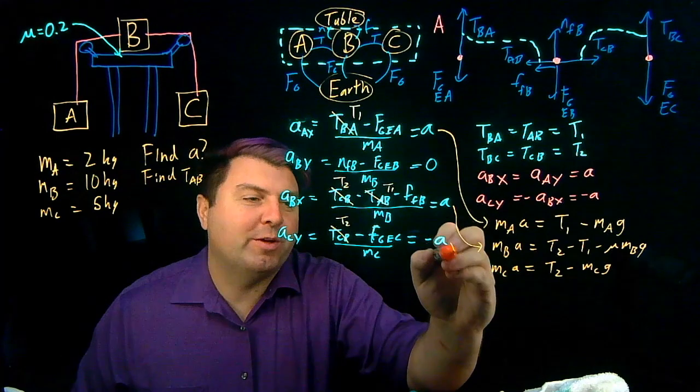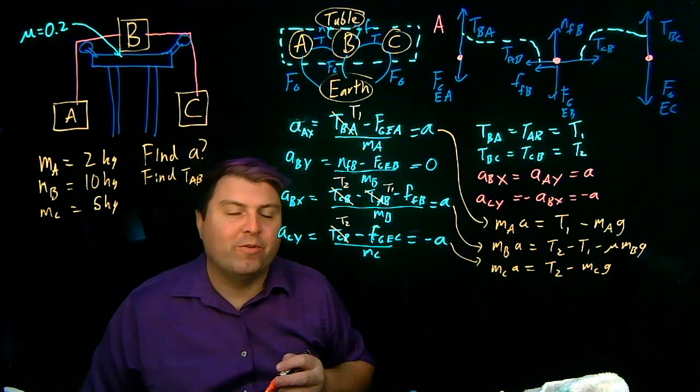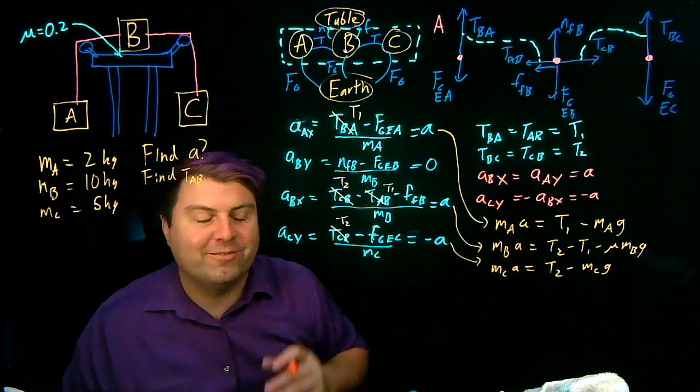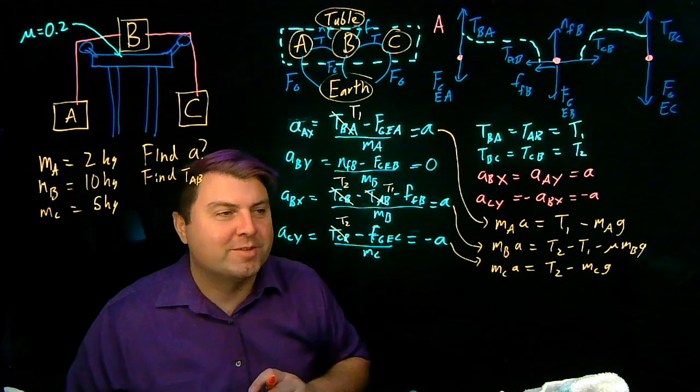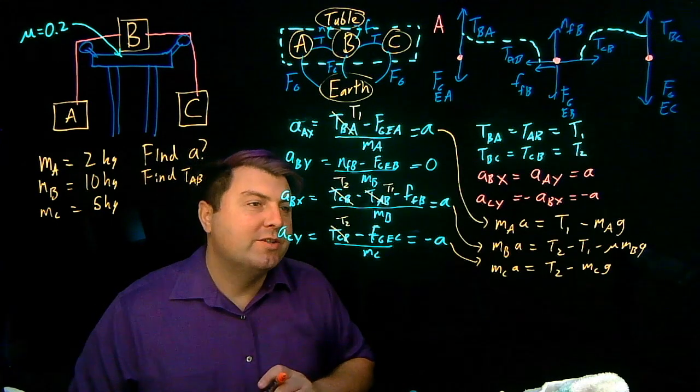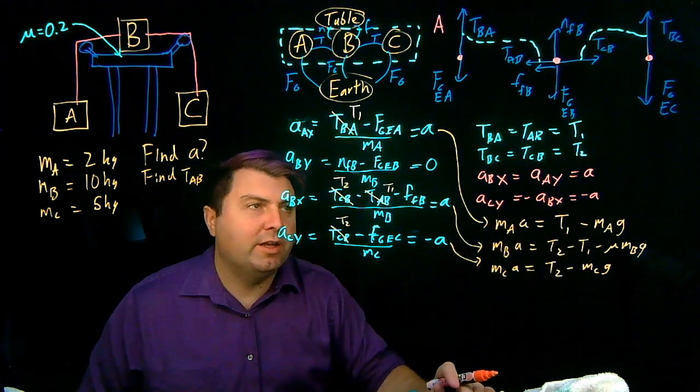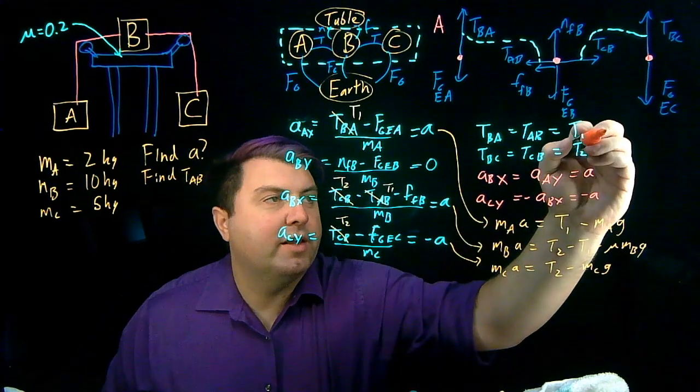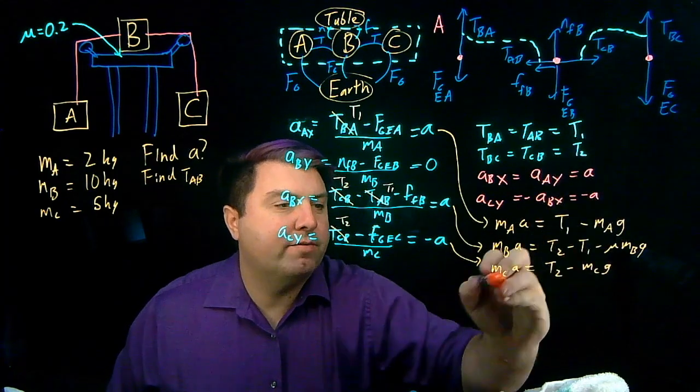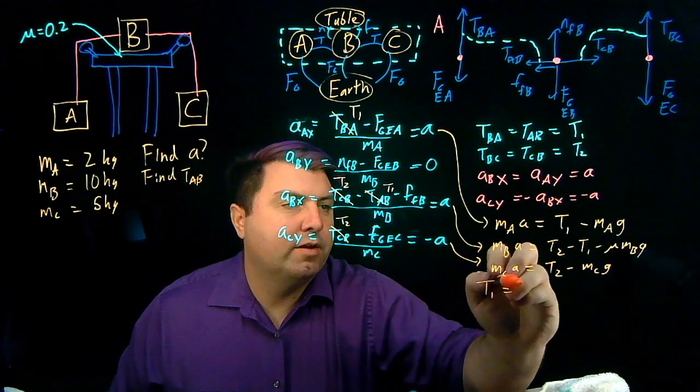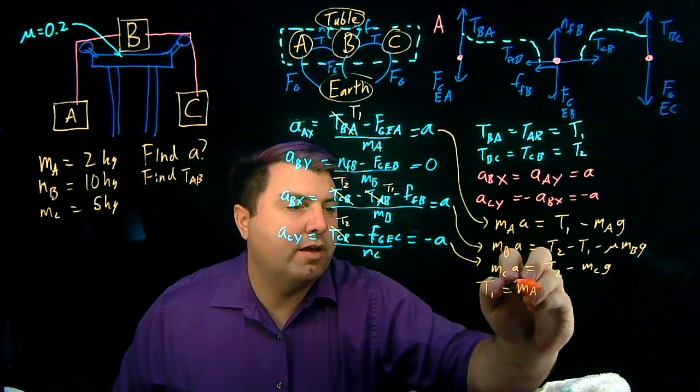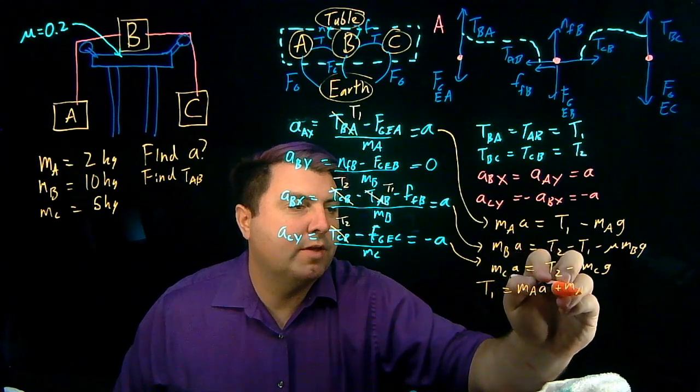So now we have three equations, three unknowns. A little bit of trick to get us here, but we want to solve this all in one screen, one sheet. So we have to do a couple of steps quickly just to show it. So what I can do pretty quickly is I can then solve for T1 in this way. So I can then write, from this I have T1 is going to be MAA plus MAG.